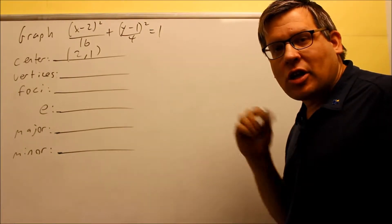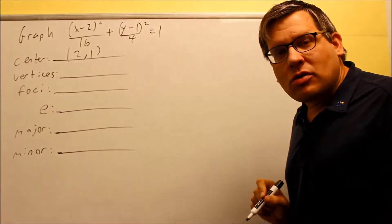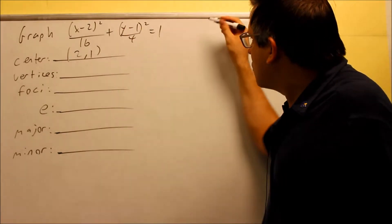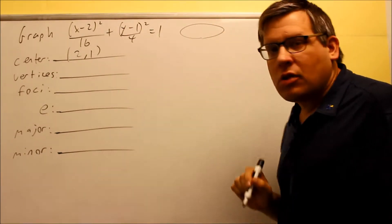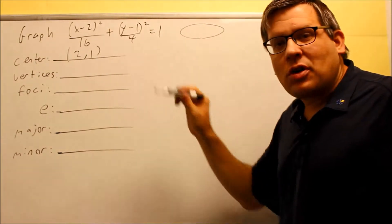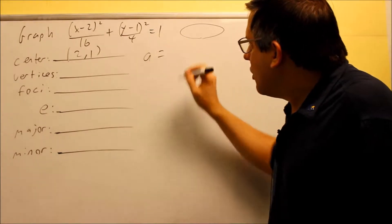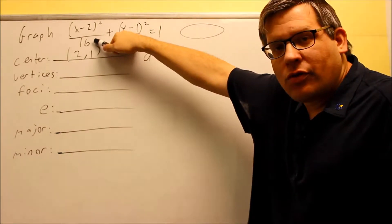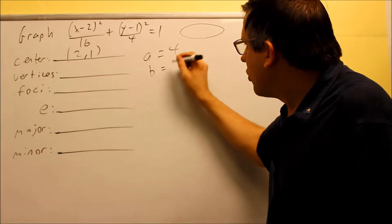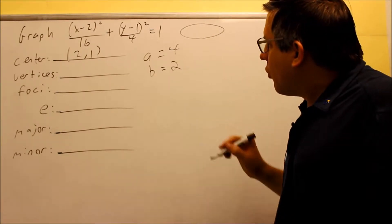Now the same rules apply as we talked about before. If it's centered at the origin, you look at where the larger number is. The larger number here is underneath the x variable. So because that's the case, we know that this one's going to be opening up sideways. Because again, larger number underneath the x means it opens in the x direction. We can find our a and b values right away. Your a is going to be the square root of this number on the bottom. Square root of the larger number is your a, so that's 4. Square root of the smaller number is b, so we have a is 4 and b is 2.